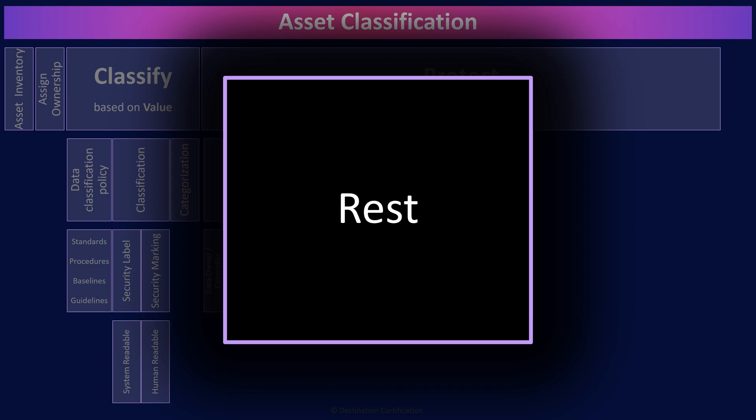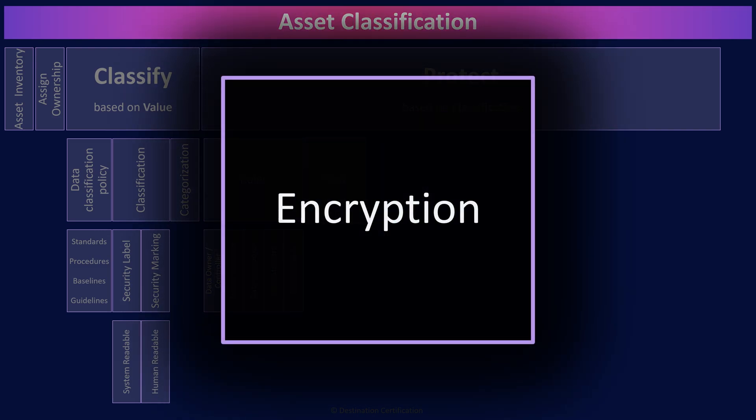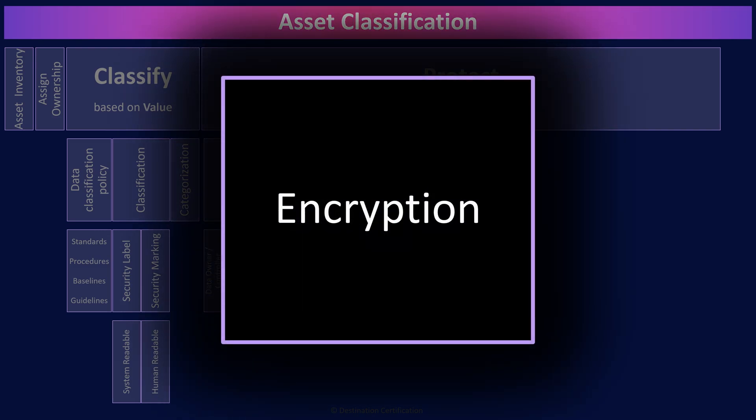We'll start with techniques for protecting data at rest. One of the major techniques that we use is encryption. We use one of the many excellent encryption algorithms, which we'll discuss in domain 3 to encipher, encrypt the data and turn it into ciphertext. The ciphertext is then protected, unless an attacker can get their hands on the correct encryption key to decipher the data, or they discover a flaw in the encryption algorithm.